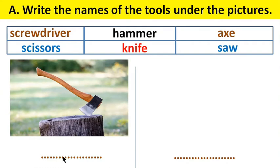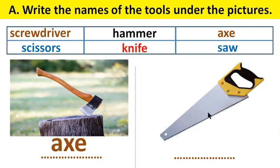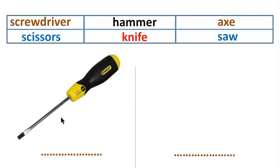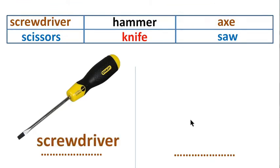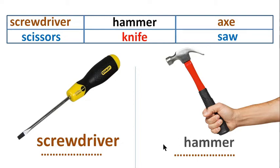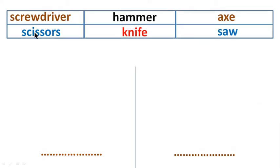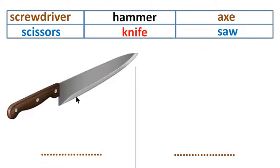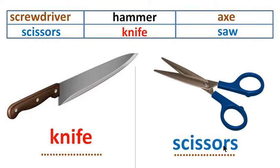We can name the tools here. This one is saw. It is screwdriver. This is hammer. Knife. Scissors.